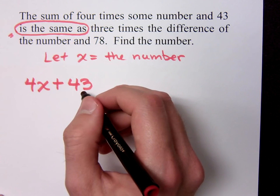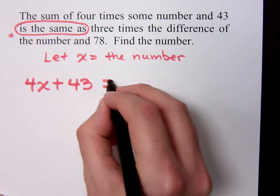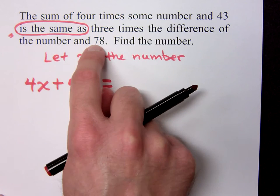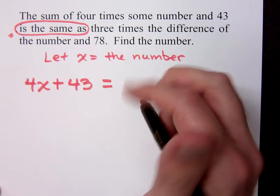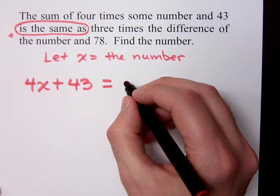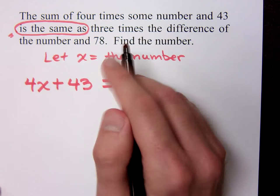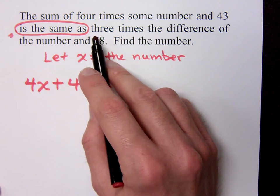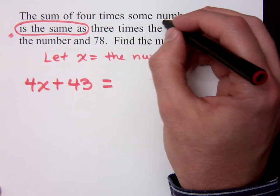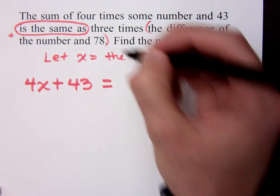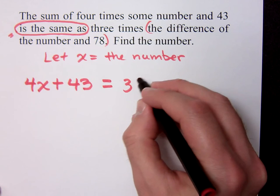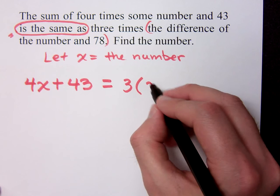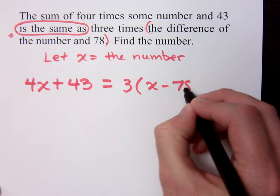'Is the same as' is translated as equals. Then we have three times the difference of the number and 78. How do you write that? Someone says 3x minus 78 — but no. Does it say the difference first? It says three times first, so it's three, then parentheses: 3(x minus 78).